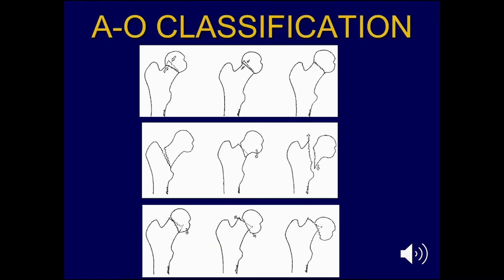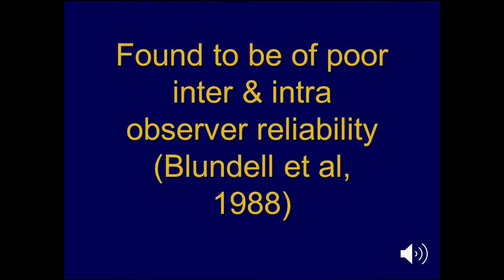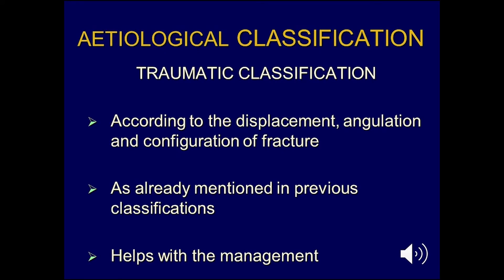The AO classification, although quite elaborate and detailed, unfortunately has not been found to have good inter- or intra-observer reliability, so it is not used that often. The previous classifications were traumatic classifications according to displacement, angulation, and configuration of the fracture.